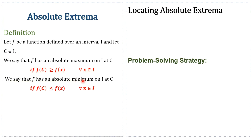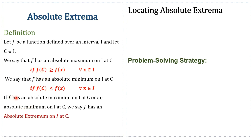Similarly, we say that f has an absolute minimum on I at c if the value of the function at c is less than or equal to the values of the function at x, for all x belonging to I. If f has an absolute maximum on I at c or an absolute minimum on I at c, we say that f has an absolute extremum on I at c.